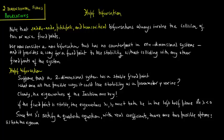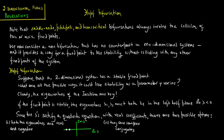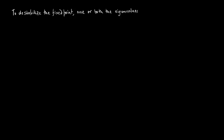One: both the eigenvalues are real and negative — we plot the imaginary part of lambda versus the real part of lambda and we have two eigenvalues which are real and negative. Two: they are complex conjugates — we plot again the imaginary and real parts of lambda and we have complex conjugate eigenvalues. To destabilize the fixed point, one or both of the eigenvalues need to cross into the right half plane as mu varies.